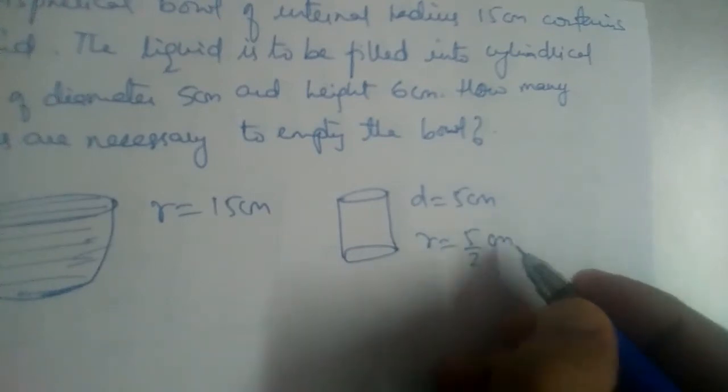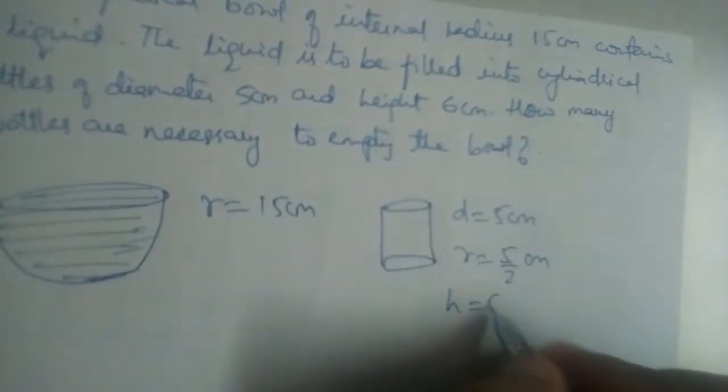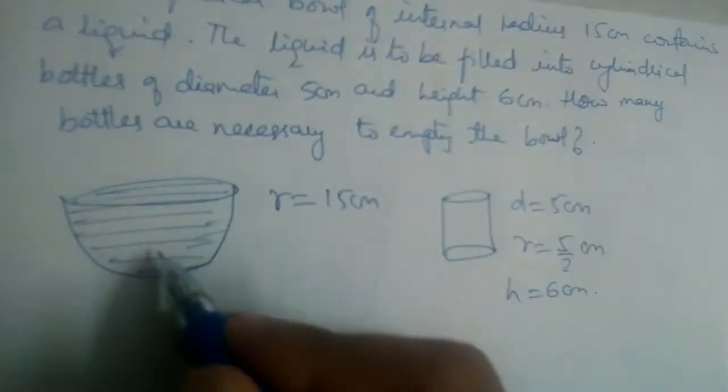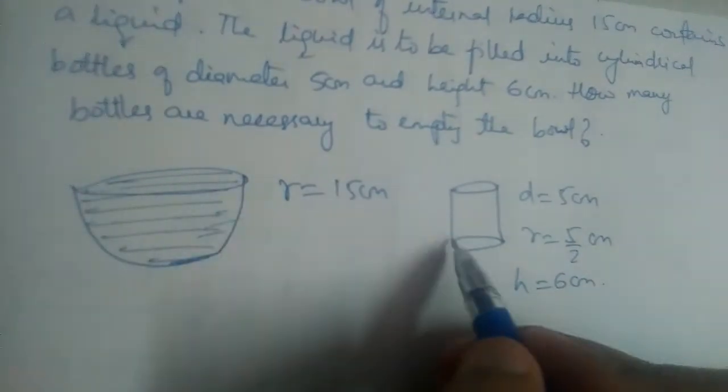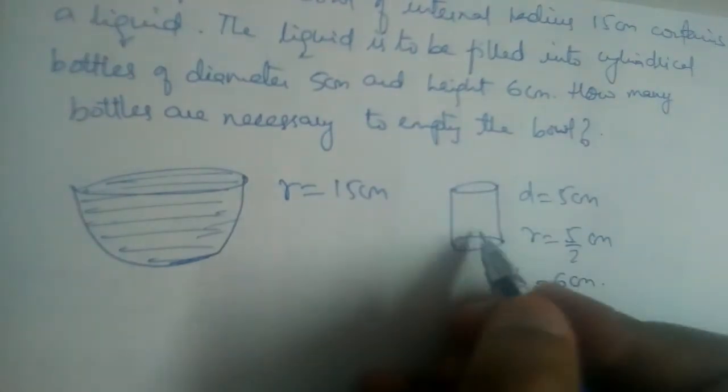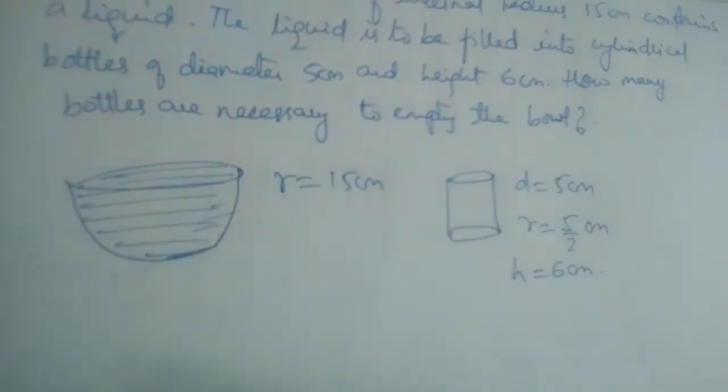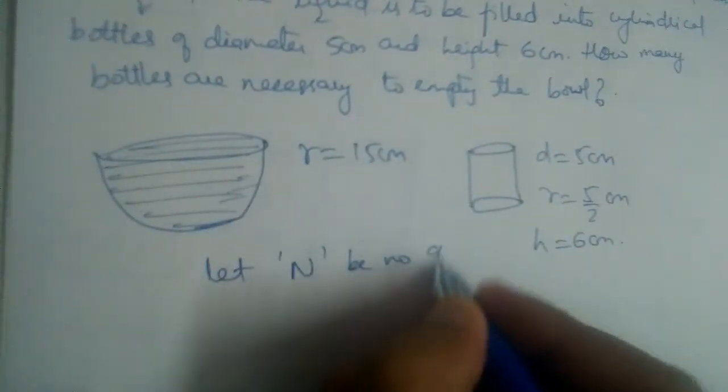The diameter of each bottle is 5 centimeters, so the radius will be 5 by 2 centimeters, and the height is 6 centimeters. How many bottles are necessary to empty the bowl? That means the volume of this hemisphere should be equal to n times the volume of the cylinder.